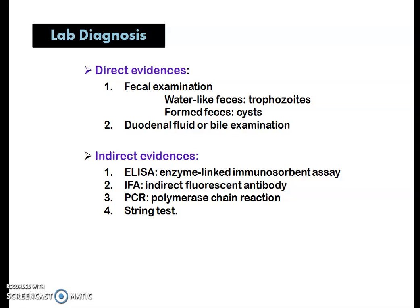For lab diagnosis, techniques are grouped under two headings: direct evidence and indirect evidence. Direct evidence includes fecal examination — watery feces may contain trophozoites and formed feces may contain cysts — as well as duodenal fluid or bile examination demonstrating trophozoites. Indirect evidence includes in vitro tests such as ELISA, IFA (indirect fluorescent antibody test), PCR, and the string test.